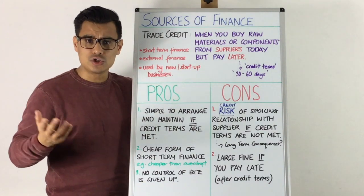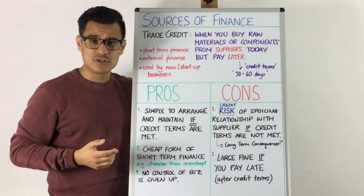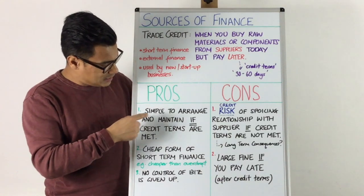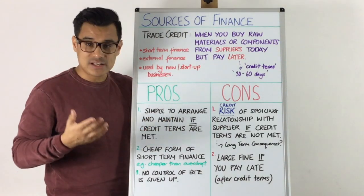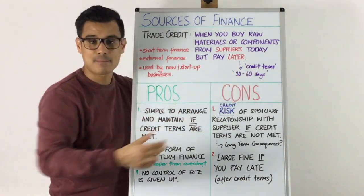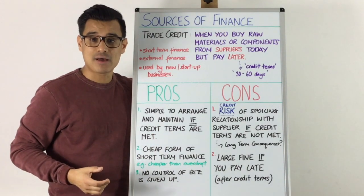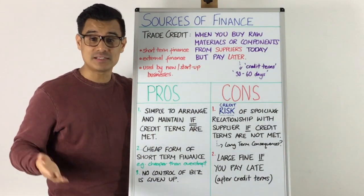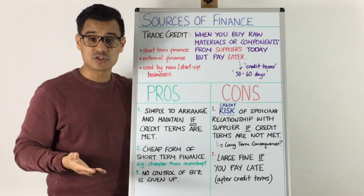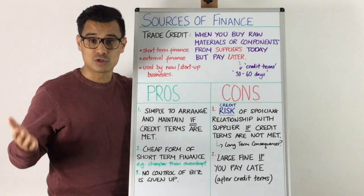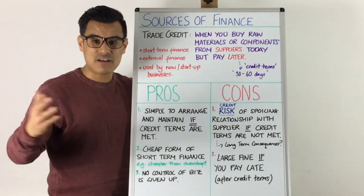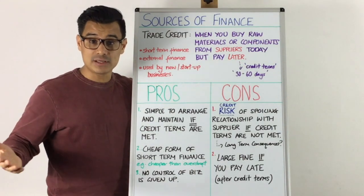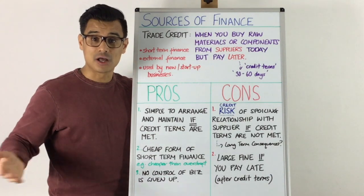Let's go through the pros and cons. Number one: trade credit is simple to arrange. If you can maintain the credit terms and make payment within the set number of days, it's easy and repeatable. You build a relationship with your supplier — for example, agreeing to take a thousand units and paying in 60 days — and if you keep doing it, you build a strong relationship for the future.